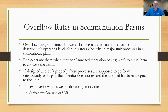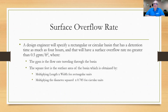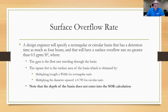The parts we're discussing today are surface overflow rate, which we write as SOR, and weir overflow rate, which we'll call WOR. A design engineer will specify a rectangular or circular basin with a detention time of up to four hours for sedimentation, with a surface overflow rate typically no greater than 0.5 gallons per minute per square foot. The square feet is the surface area obtained by multiplying length times width for a rectangular basin, or diameter squared times 0.785 for a circular basin. Note that the depth of the basin is not used in these calculations.